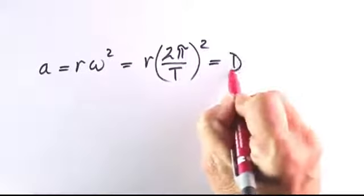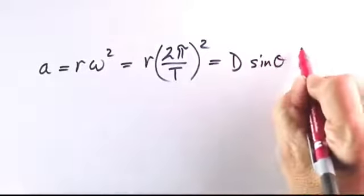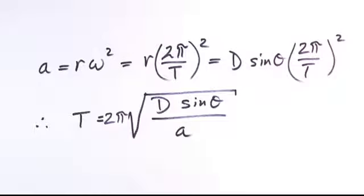Then the right triangle gives us r equals d sine theta. And then we rearrange to get the expression for T in terms of acceleration a.